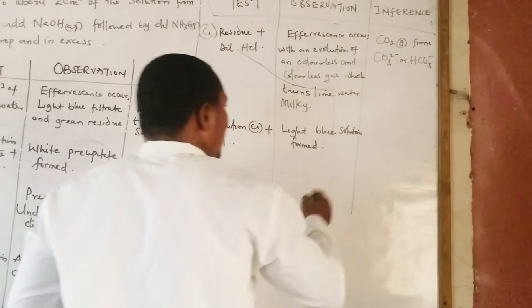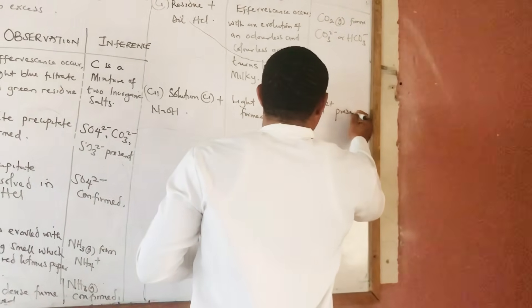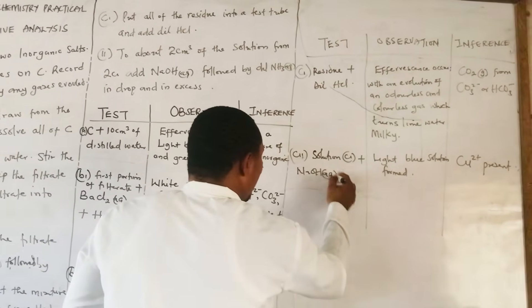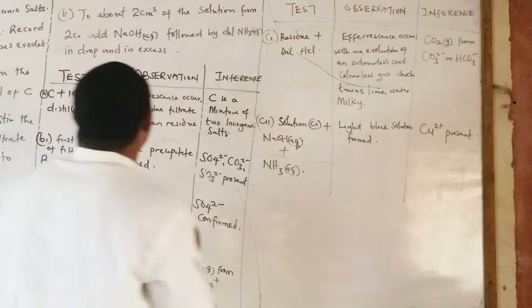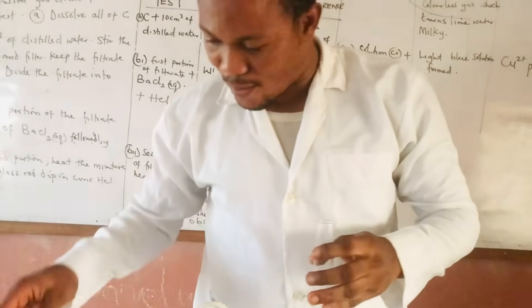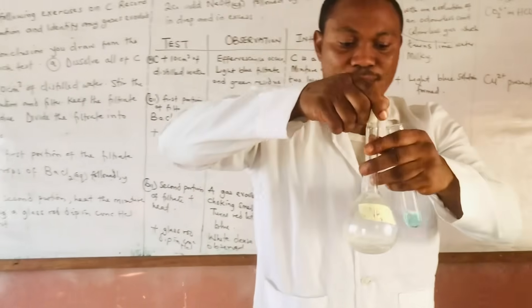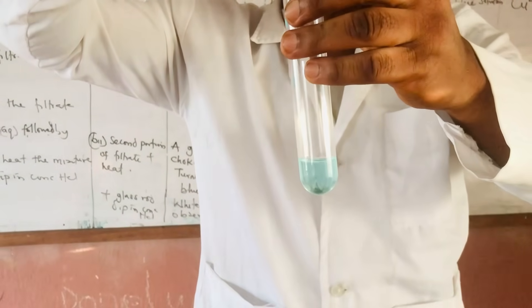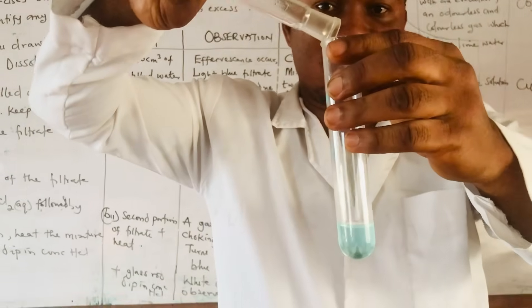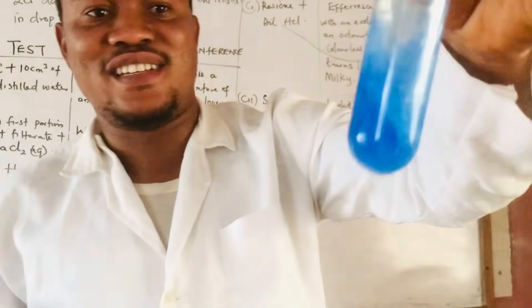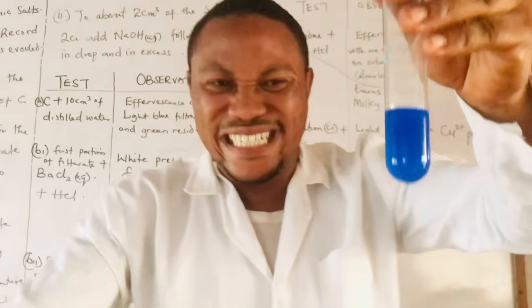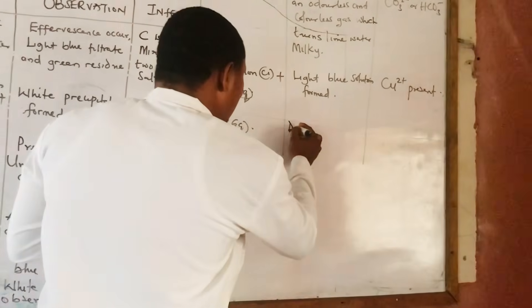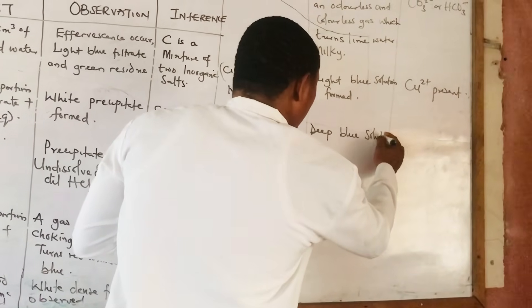A light blue solution — and when you have a light blue solution here, that indicates copper(II) ion, Cu²⁺. Now, followed by ammonia solution in drops and in excess — here's our ammonia solution. Adding in drops: from the light blue, in drops and in excess — we have a deep blue solution formed.